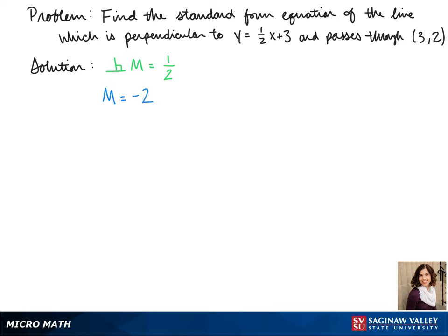So we have our slope, and we were given this point. We can take both of those and plug it into our point-slope formula. So we get y minus 2 equals negative 2 times x minus 3.